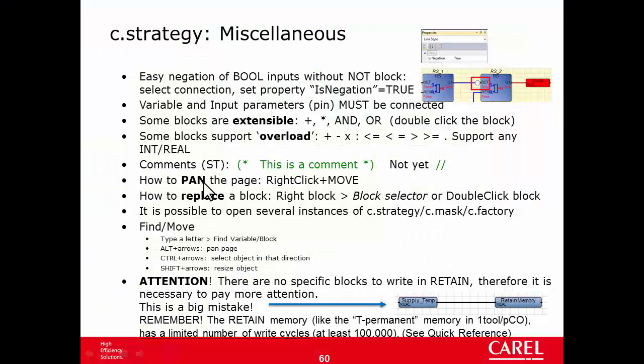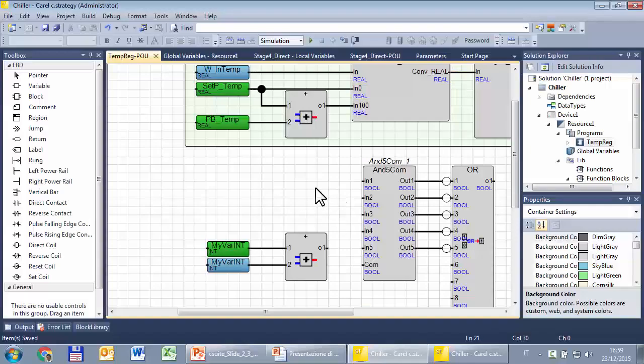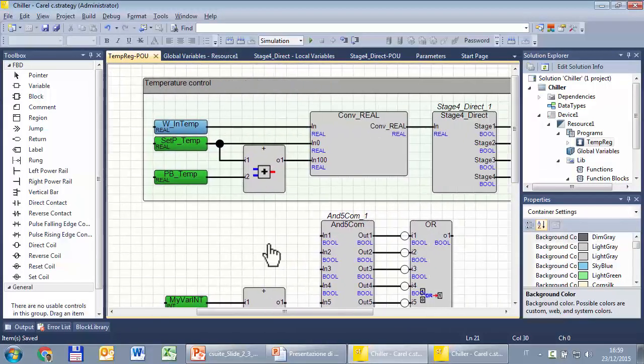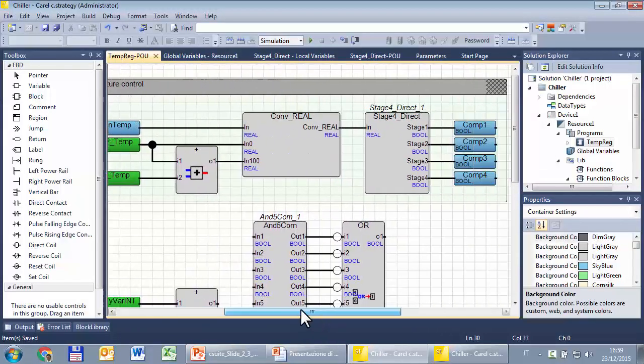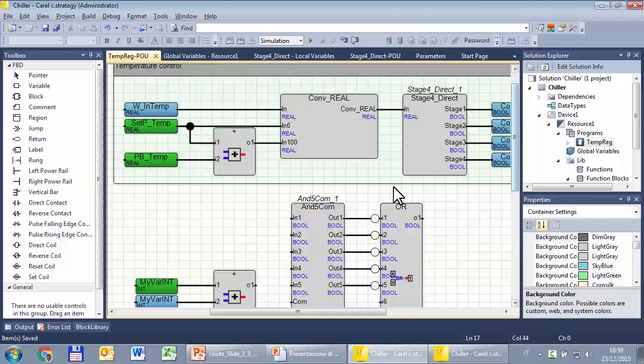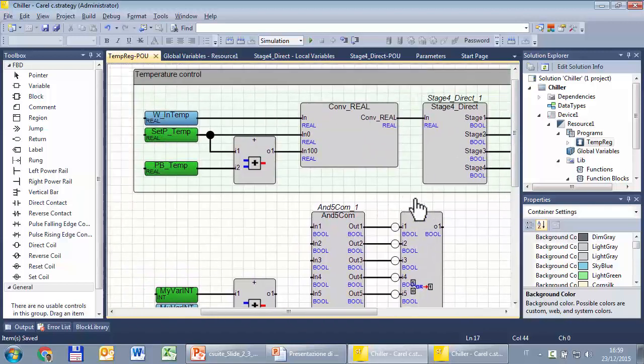Also, this function is very convenient. How to pan the page or pan the POU. Right click the mouse and move. I'm clicking the right button and then move, without using scroll bars. Right click and move.